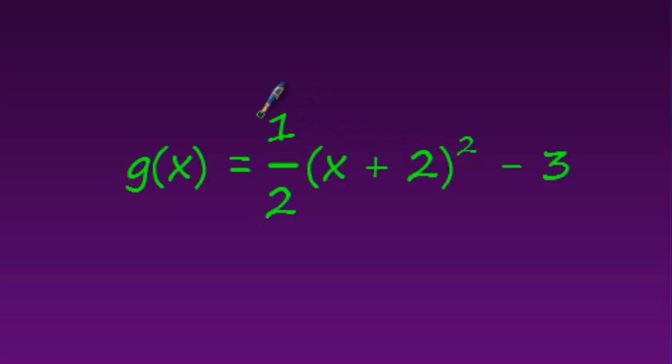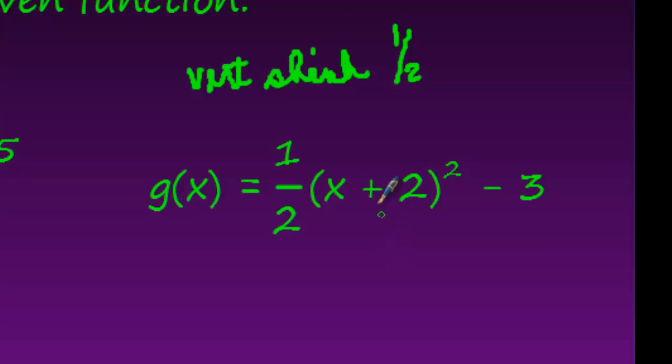This half is in front of this. So again, this will be a vertical. And because it's between 0 and 1, again, it's a shrink. So a vertical shrink by a factor of 1 half.